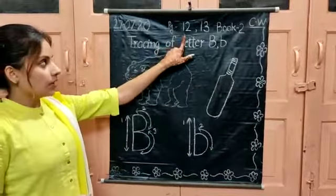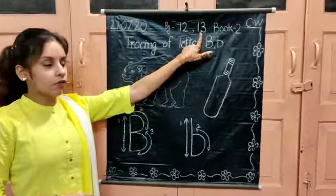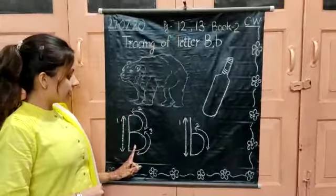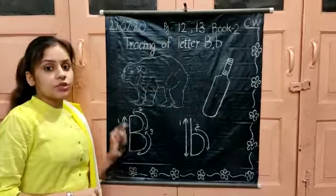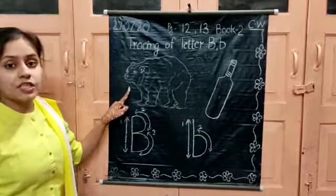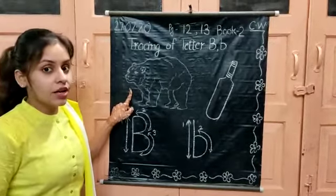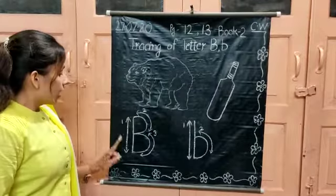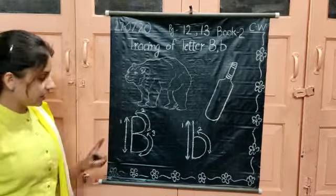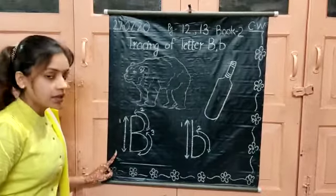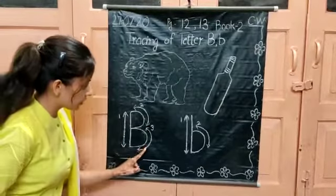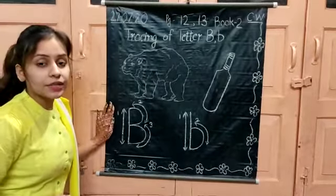On page number 12, you can see that there is capital B, in which you have to do the tracing with pencil. You can also see the picture of a bear, which you have to colour. For capital B, you have to make first of all an upward standing line, then a left open curve, and then a second left open curve. This will make capital B.